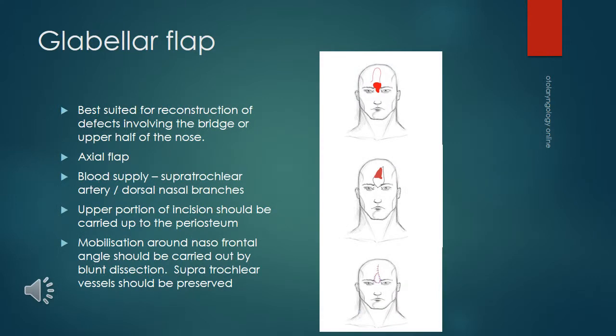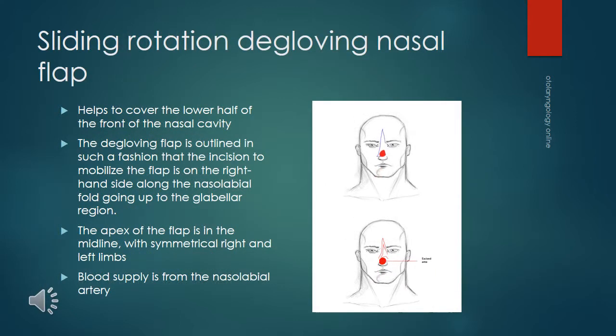The glabella flap is best suited for reconstructing surgical defects over the bridge or upper portion of the dorsum of the nose. It is an axial flap with blood supply from the supratrochlear artery and dorsal nasal branches. The upper portion of the incision should be carried down to the periosteum. The pedicle lies close to the naso-frontal angle, and the flap is outlined longer than necessary to avoid tension. Blunt dissection prevents injury to the supratrochlear vessels. Sliding rotation degloving nasal flaps are used for full-thickness defects of the upper half of the face and are axial flaps supplied by the alar labial artery.